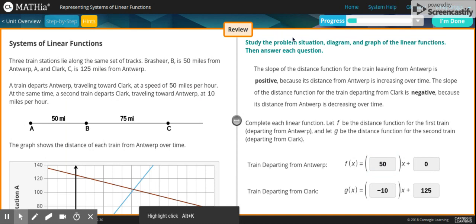So the train departing from Antwerp, it says over here, so three train stations lie along the same set of tracks. Brasher B is 50 miles from Antwerp and Clark C is 125 miles from Antwerp. A train departs Antwerp traveling around toward Clark at a speed of 50 miles per hour. At the same time, a second train departing traveling toward Antwerp at 10 miles an hour.